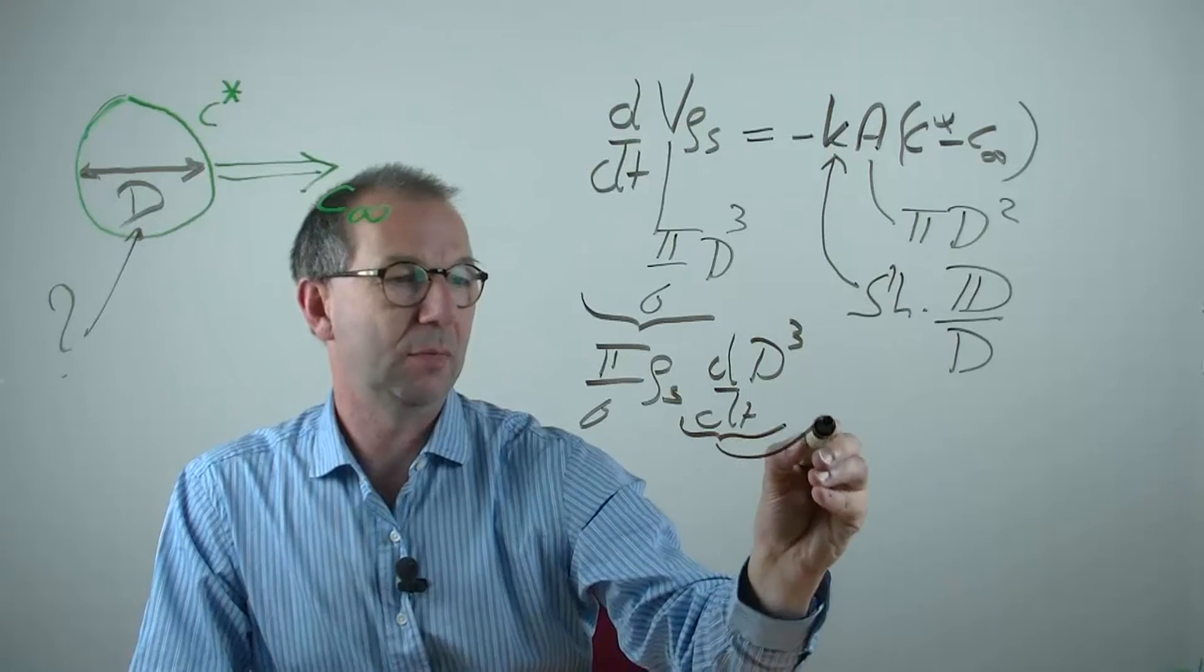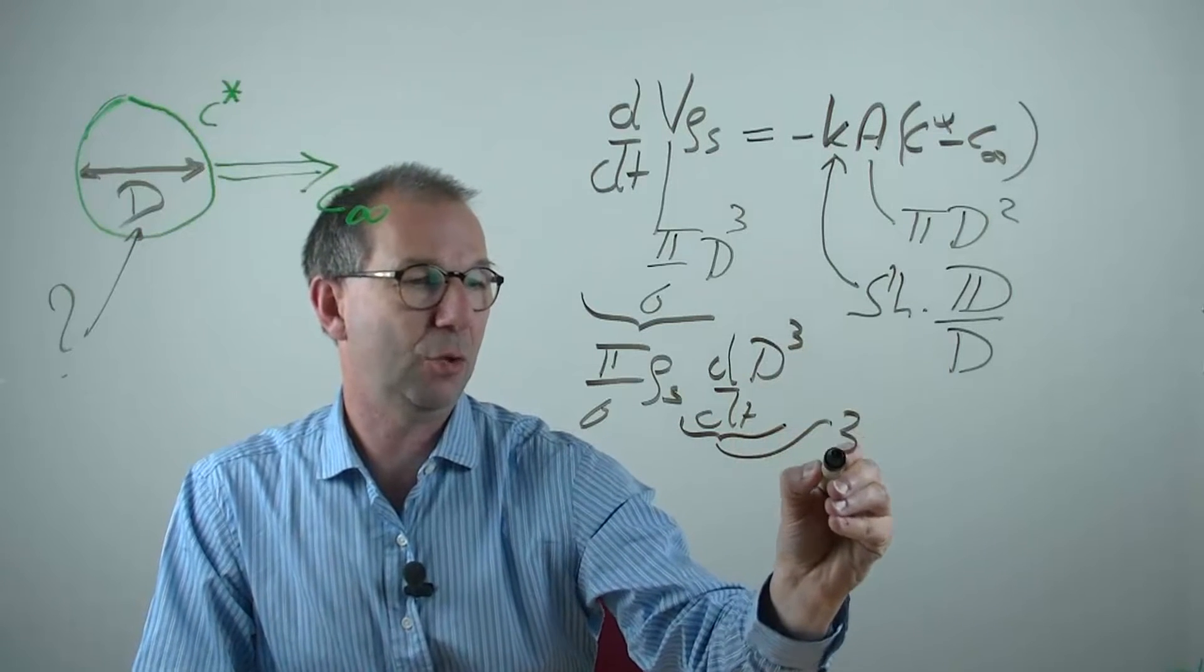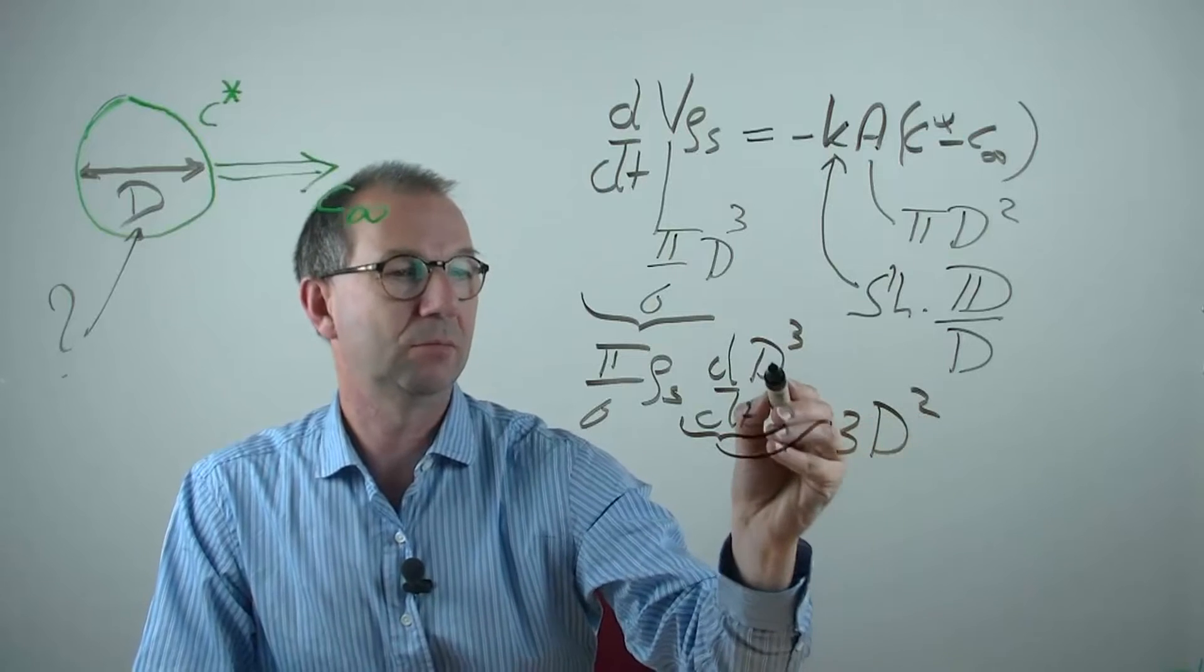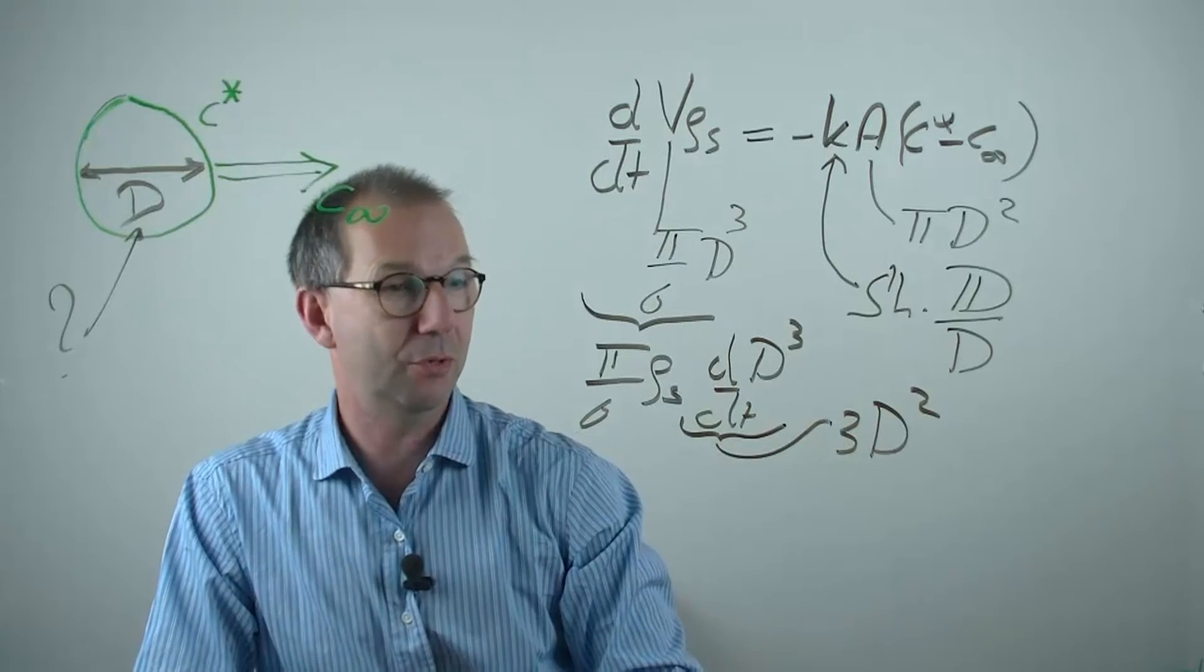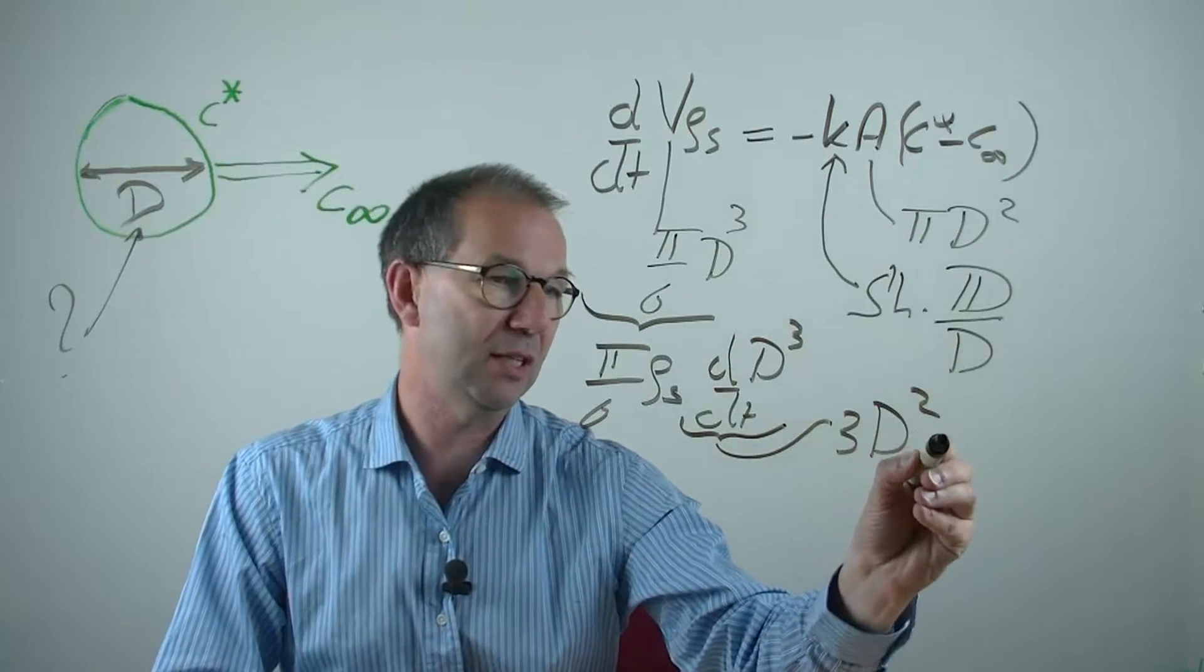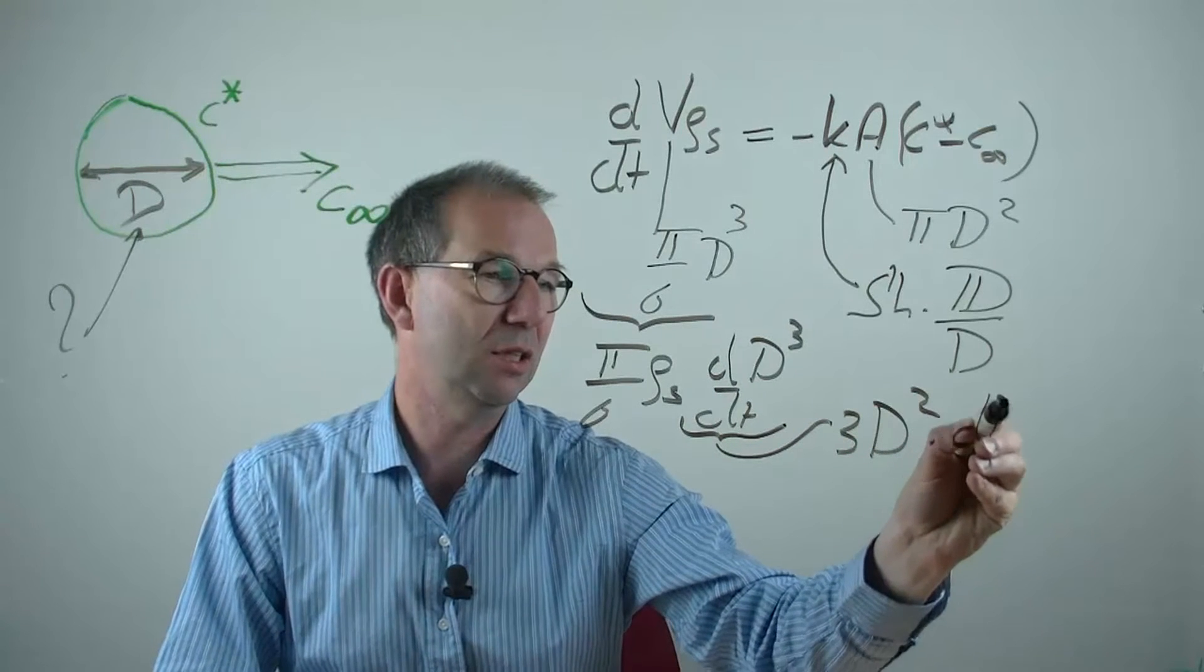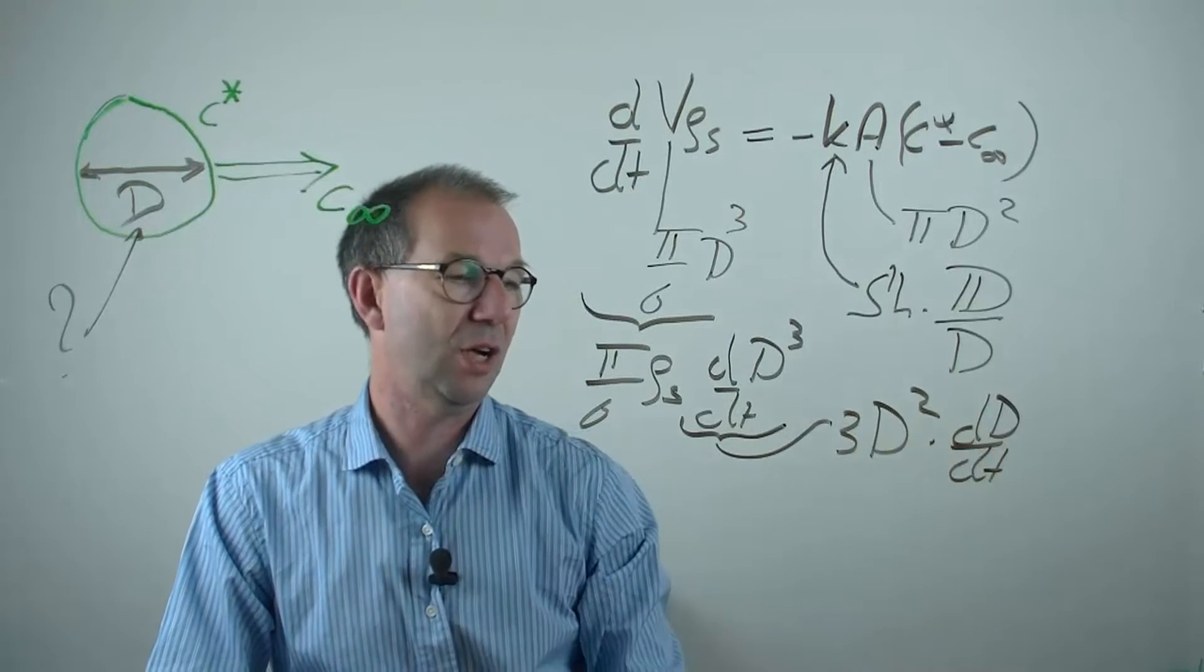If we take this derivative that spits back 3 D squared, which is the derivative of D cubed, obviously times dD/dt of the diameter itself.